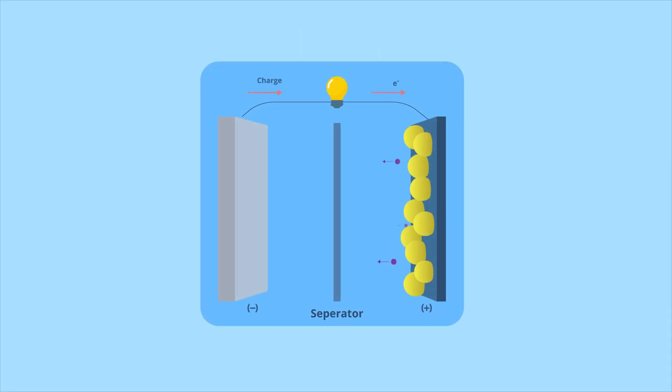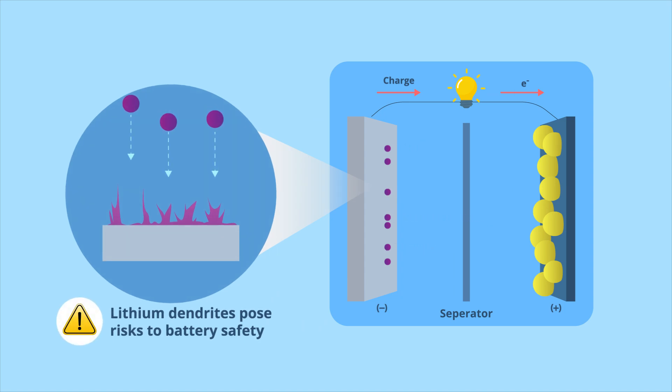Additionally, the uneven deposition of lithium ions on the anode during charging can lead to the formation of lithium dendrites, posing risks to battery safety and performance.